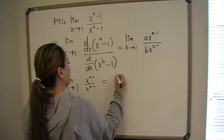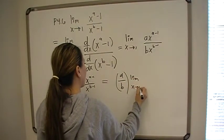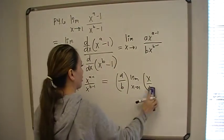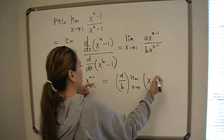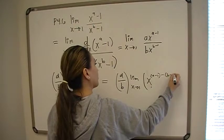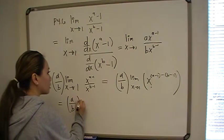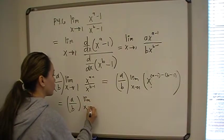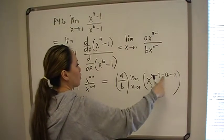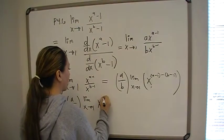That equals a over b times the limit as x goes to 1 of x to the a minus 1 over x to the b minus 1. We can simplify this: x to the exponent of the top minus the exponent of the bottom. That simplifies to a over b times the limit as x goes to 1 of x to the a minus b.